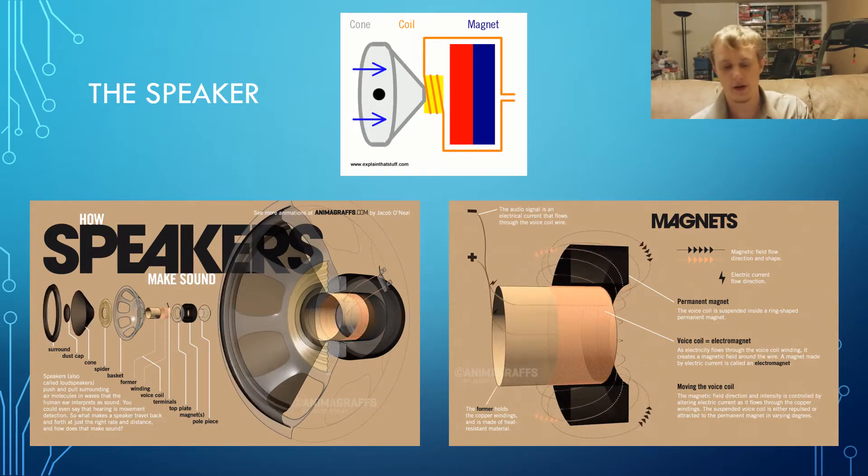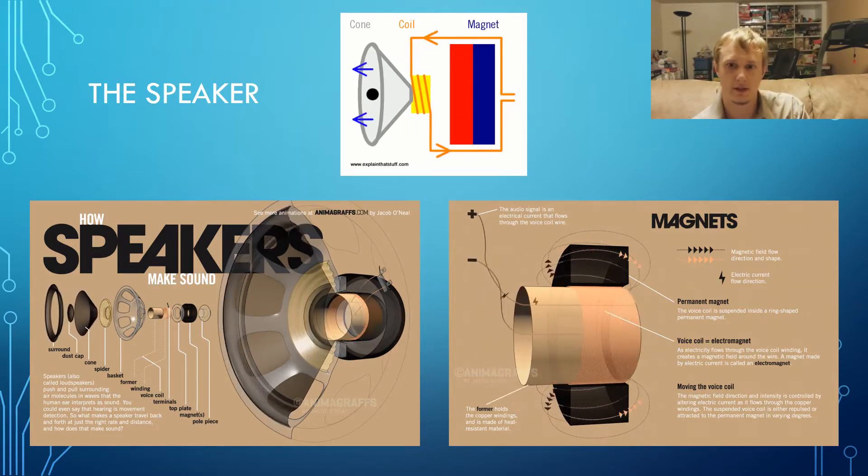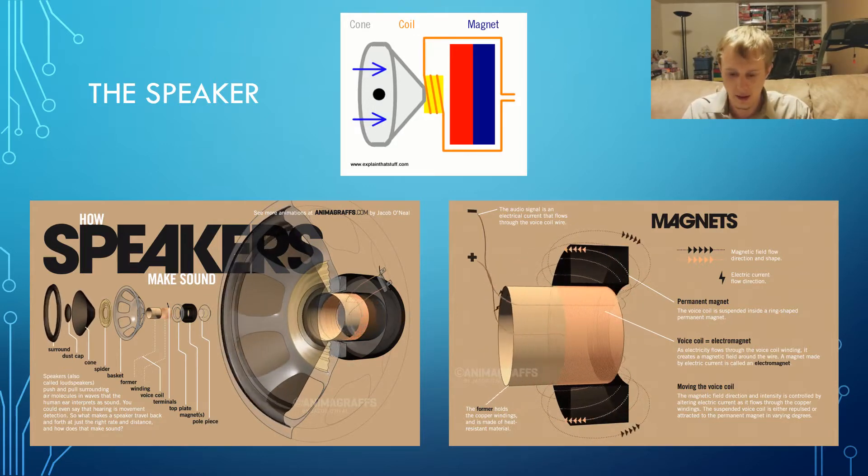As the coil moves, the cone, which is usually made up of plastic, paper, or light metal, moves back and forth, sending vibrations or sound waves into the air.